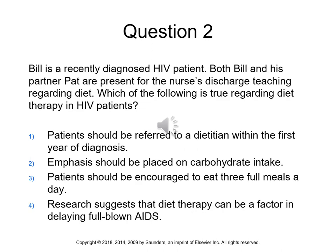Question 2: Bill is recently diagnosed with HIV. Both Bill and his partner Pat are present for discharge teaching regarding diet. Which of the following is true regarding diet therapy and HIV patients? The answer is four — research suggests that diet therapy can be a factor in delaying full-blown AIDS. HIV patients should be referred to dietitians as soon as possible, emphasis should be placed on protein intake, and meals should consist of small frequent meals instead of three full meals.